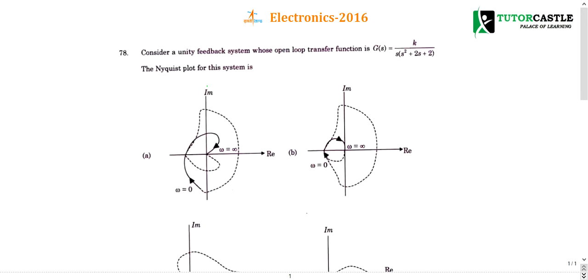Question number 78. Consider a unity feedback system whose open loop transfer function is G(s) = K divided by s into (s² + 2s + 2). The Nyquist plot is asked. Many people will be afraid of this Nyquist plot, but it is very simple. I can teach you in an easy way. Let us see how to plot a Nyquist plot.